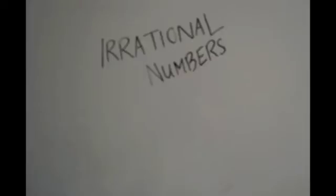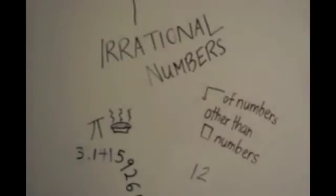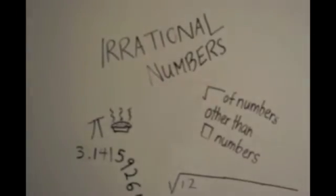Irrational numbers cannot be expressed as a fraction, and examples include pi, which is 3.1415926. Also, the square root of any number other than square numbers, such as the square root of 12.